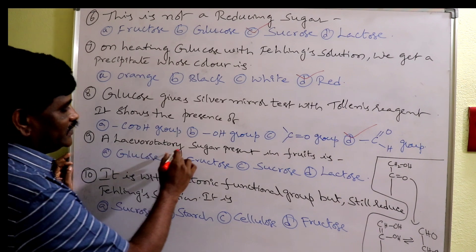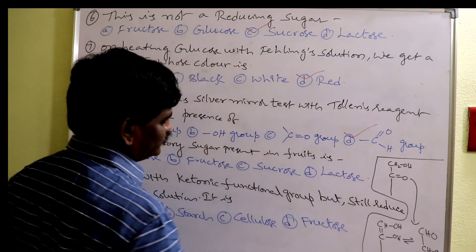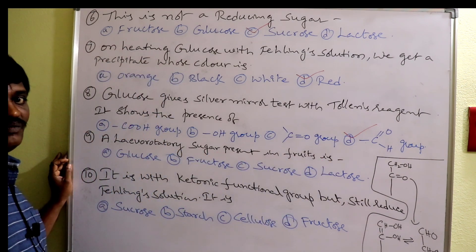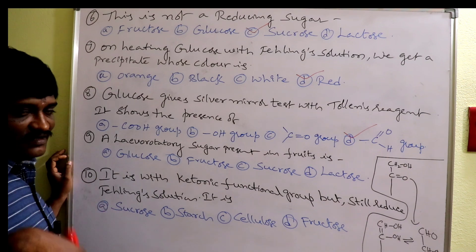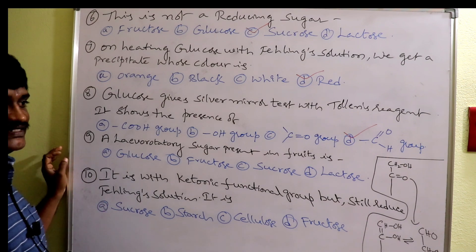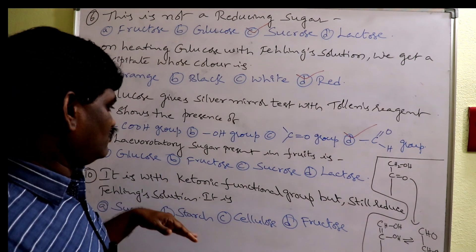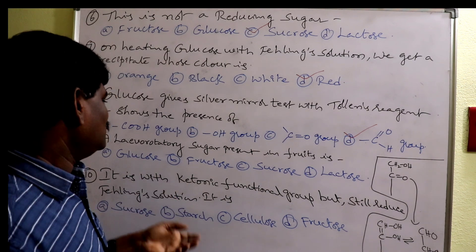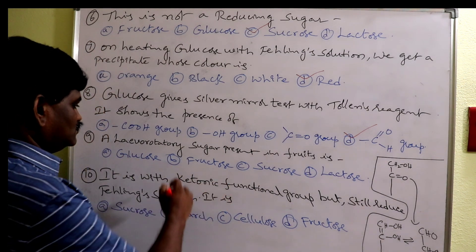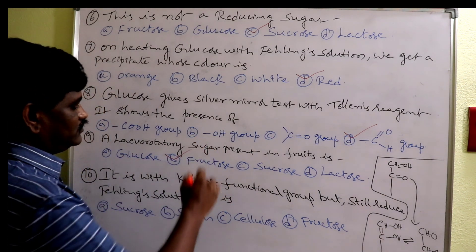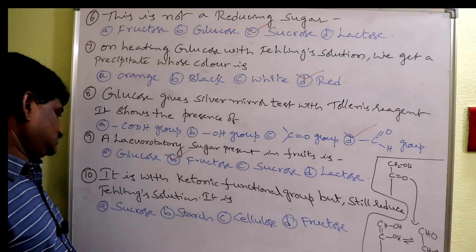A levo-rotatory sugar present in fruits: levo-rotatory means the sugar rotates plane-polarized light in an anticlockwise direction. Fructose is also called laevulose and is levo-rotatory. Glucose is dextro-rotatory. Answer: fructose.